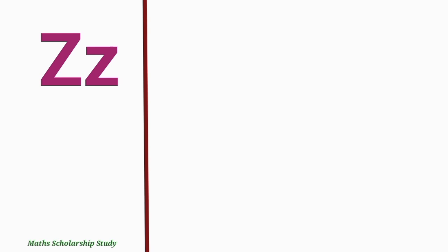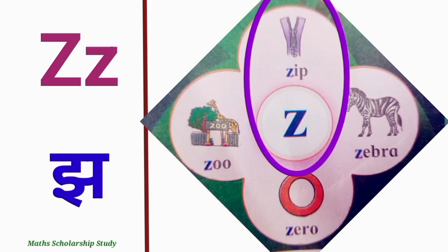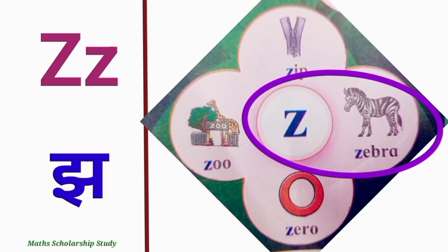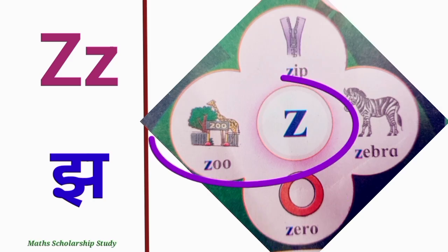Letter Z. Z says Z. Z for jeep, Z for zebra, Z for zero, Z for zoo.